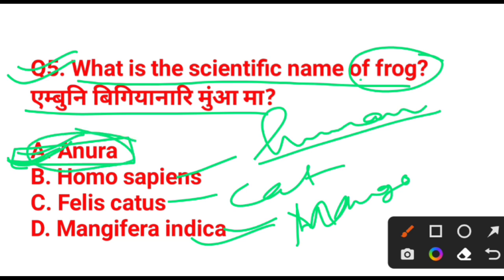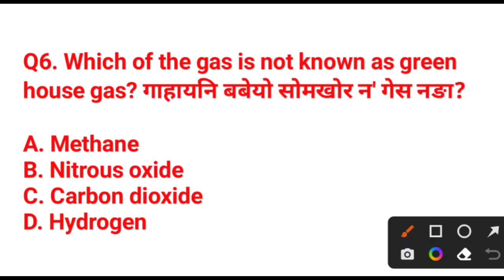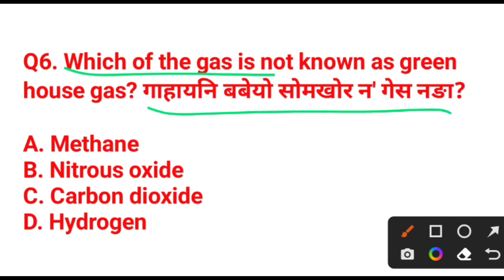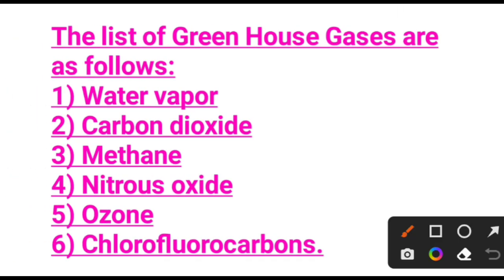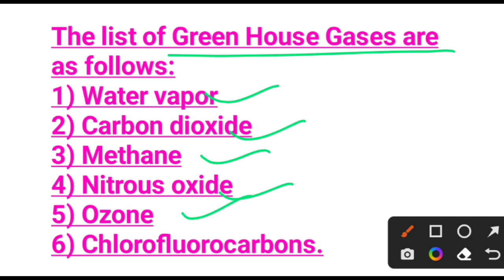Next question: which of the following gases is not known as a greenhouse gas? The answer is hydrogen — option A. Hydrogen is not a greenhouse gas. Greenhouse gases include methane, nitrous oxide, carbon dioxide, and others. Option number D is the right answer — hydrogen is not a greenhouse gas. Greenhouse gases include water vapor, carbon dioxide, methane, nitrous oxide, ozone, and chlorofluorocarbons.